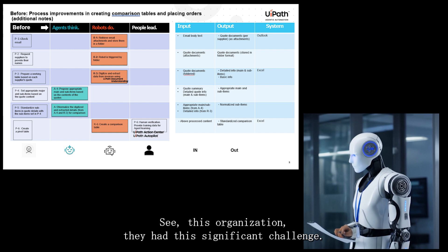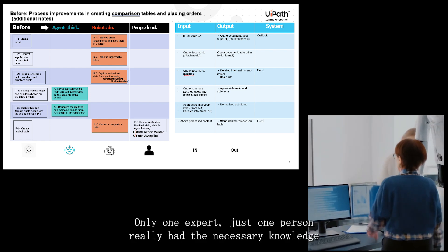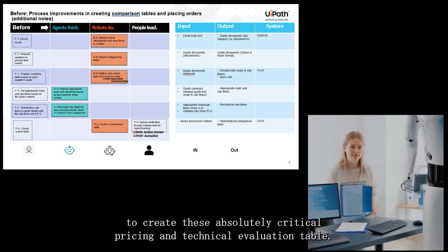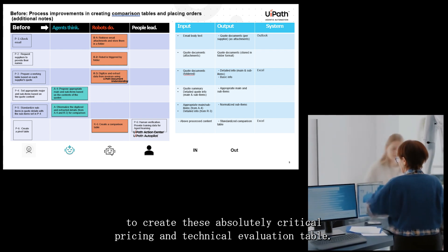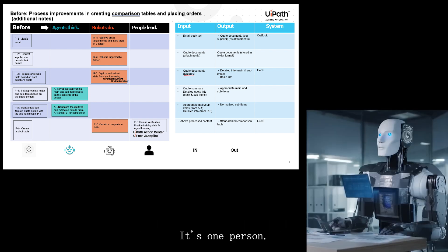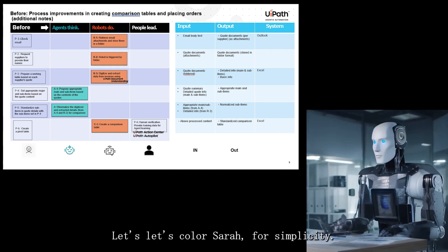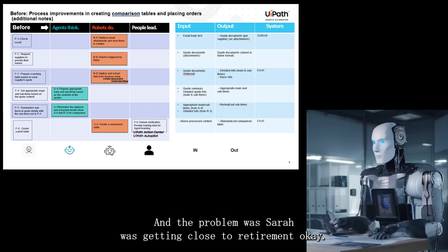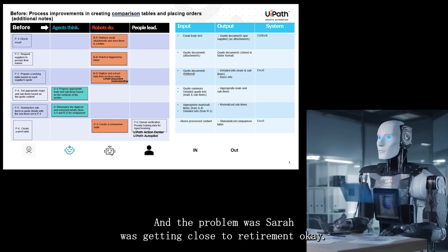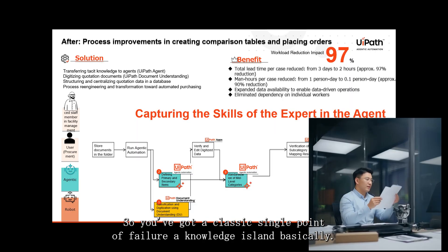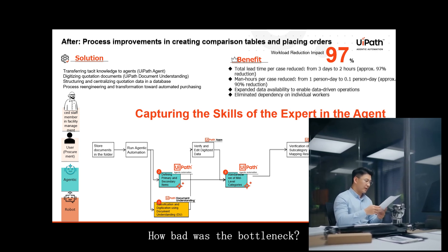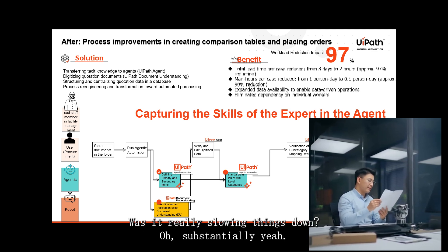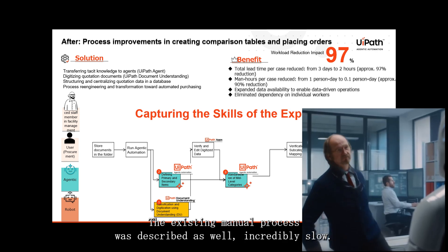This organization had a significant challenge: only one expert — let's call her Sarah — had the necessary knowledge to create these absolutely critical pricing and technical evaluation tables. Sarah was getting close to retirement, making this a classic single point of failure, a knowledge island. And it was substantially slowing down procurement operations.